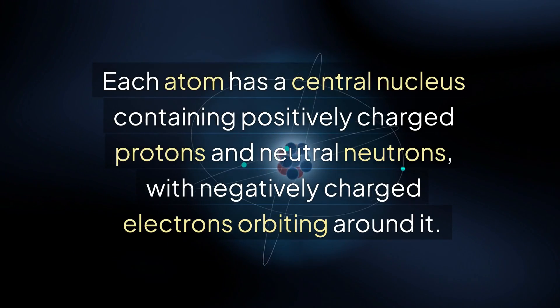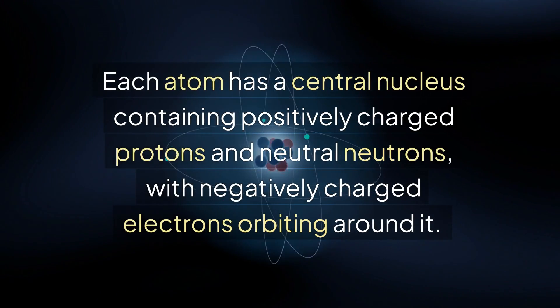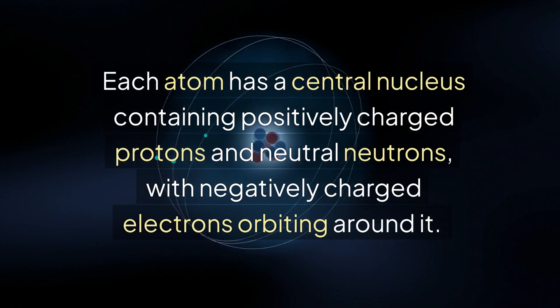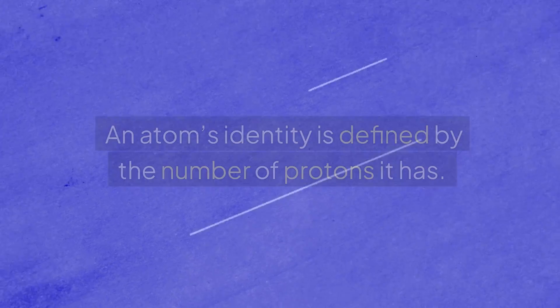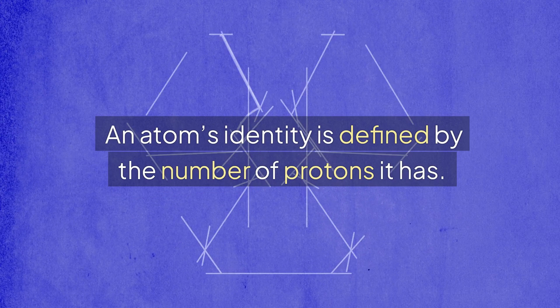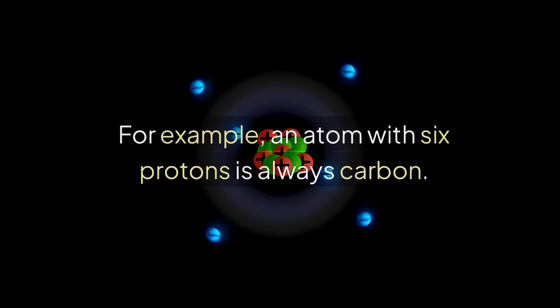Each atom has a central nucleus containing positively charged protons and neutral neutrons, with negatively charged electrons orbiting around it. An atom's identity is defined by the number of protons it has. For example, an atom with six protons is always carbon.